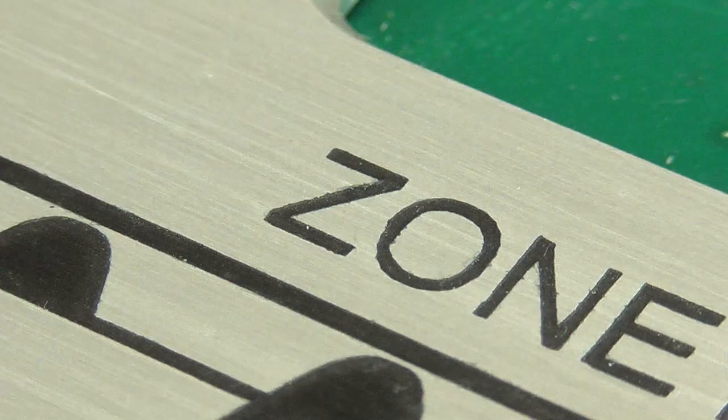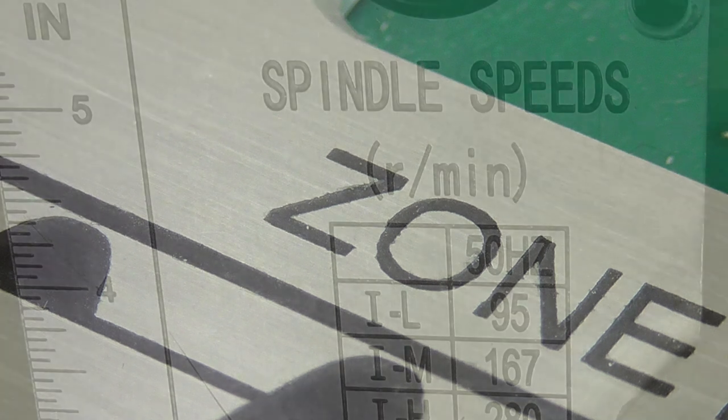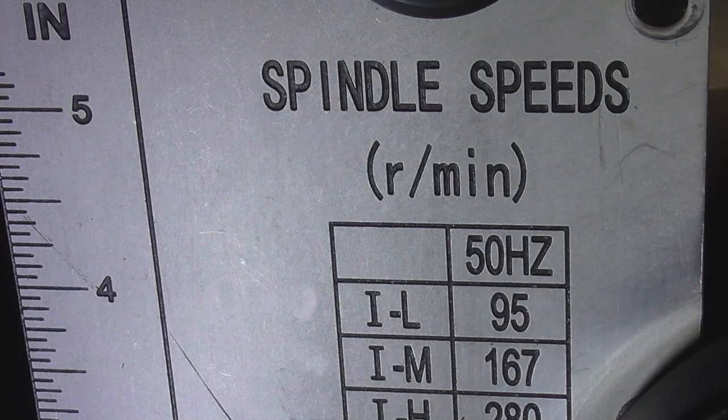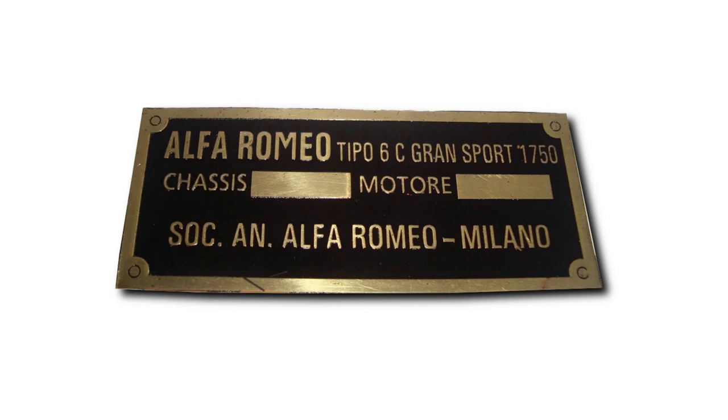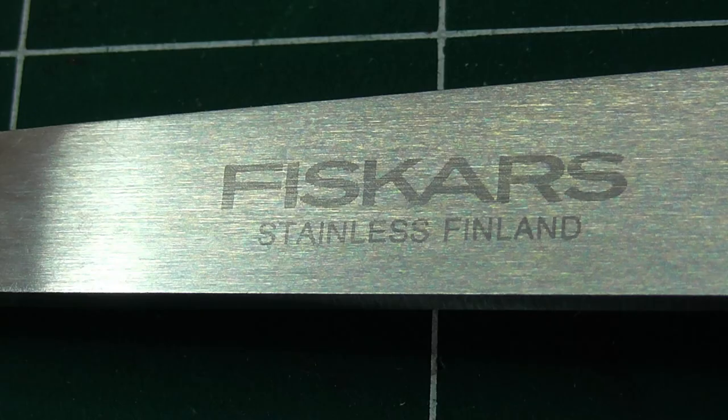This method is used on many commercial machine tools and can produce deeply etched plaques and badges that look identical to acid etching but without the acid. It can also make fine markings on things like knife blades.